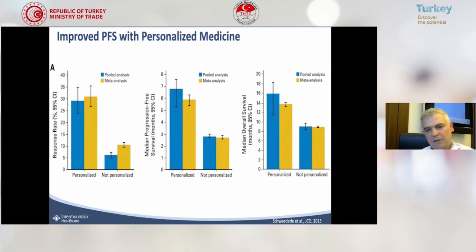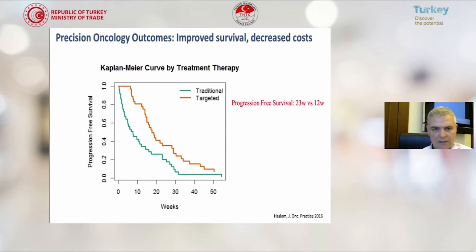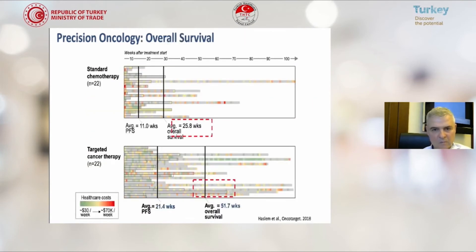In the median overall survival on the right-hand side, you see far better outcomes with personalized medicine. If you look at the Kaplan-Meier survival curve, the traditional treatment in green is worse than the red curve, which is the targeted treatment. Overall survival is also far better than with standard chemotherapy — if you treat patients with targeted cancer therapy, you see up to double the survival.